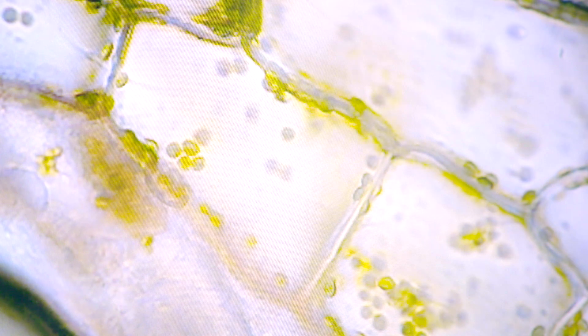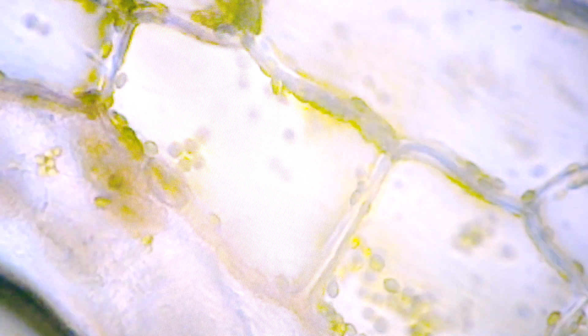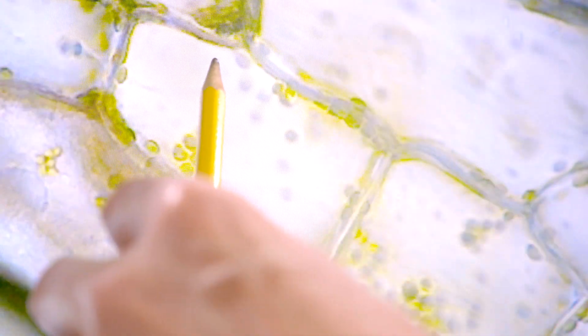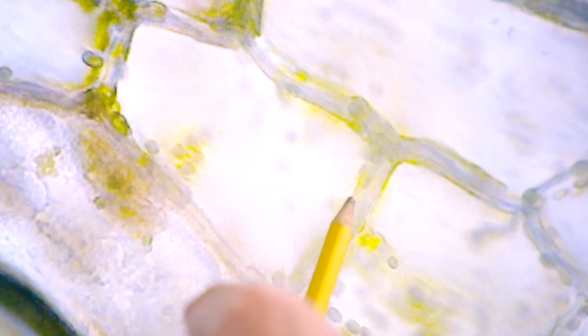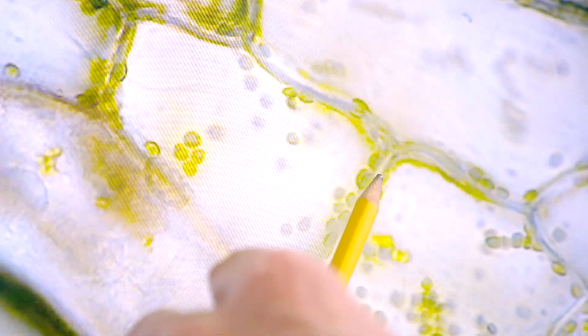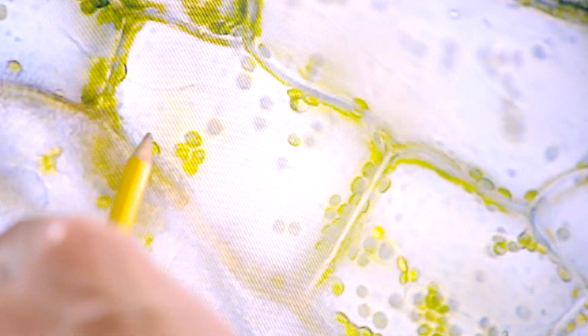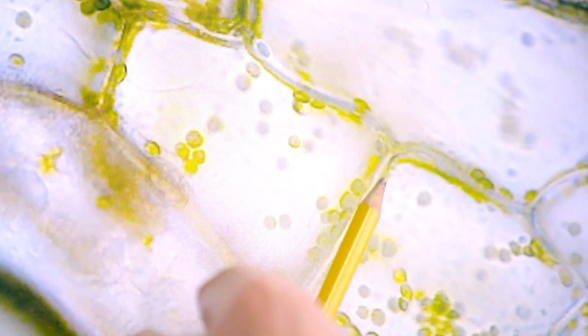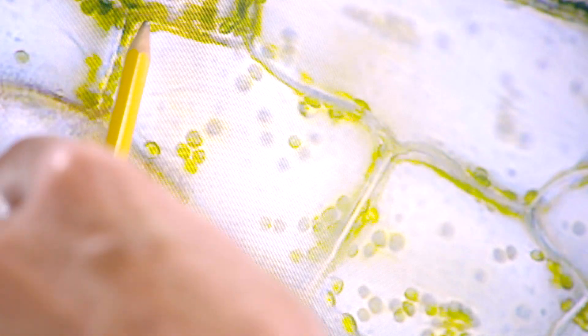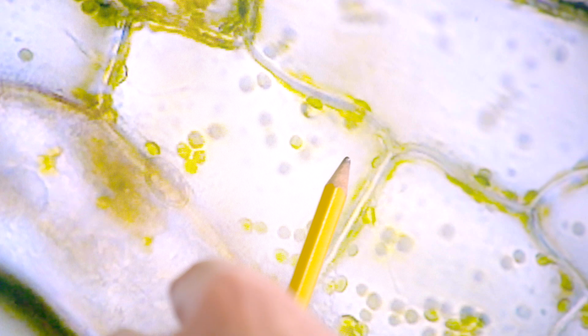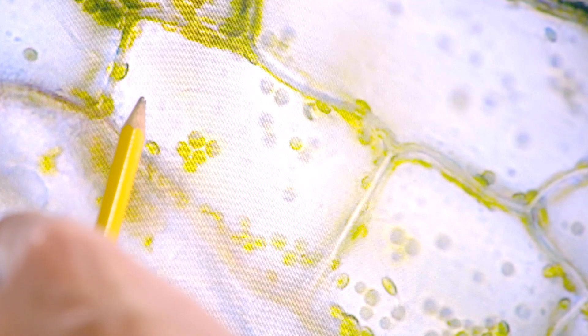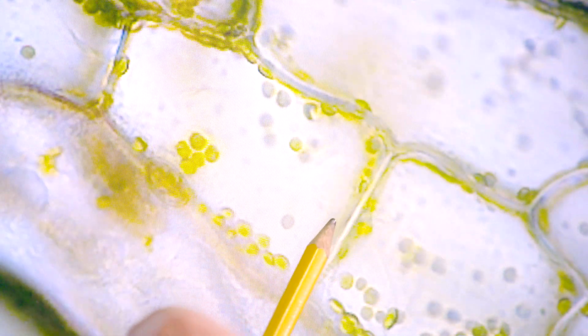Otro aspecto importante que quiero mostrarles en esta imagen que estamos observando acá, son los cloroplastos, que se mueven alrededor de la vacuola. La célula vegetal, recuerden, tiene una vacuola central grandota y estos cloroplastos tienen un movimiento alrededor de la vacuola. Ese movimiento se llama ciclosis. Acá tenemos la pared celular, el citoplasma, y acá tenemos los cloroplastos moviéndose alrededor de la vacuola. Se llama ciclosis.